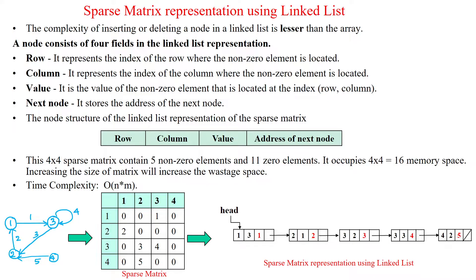Welcome to sparse matrix representation using linked list. In a linked list, each node has a data field and a pointer to the next node, holding the address of the next node. The complexity of inserting and deleting nodes in the linked list is lesser than the array representation. For a sparse matrix, a node has four fields using the linked list representation.